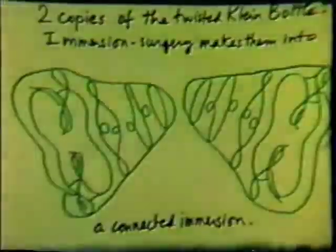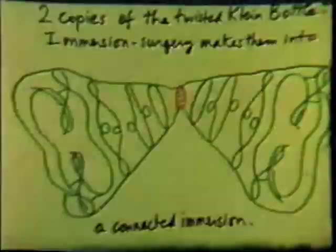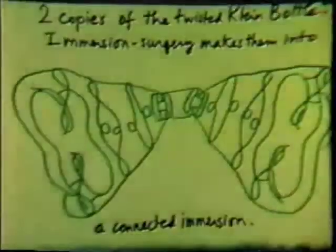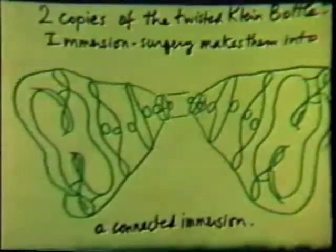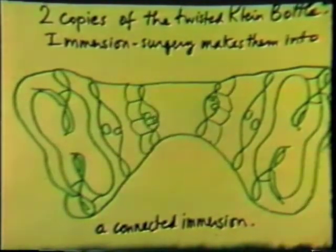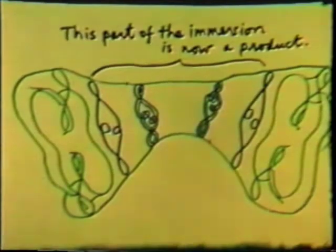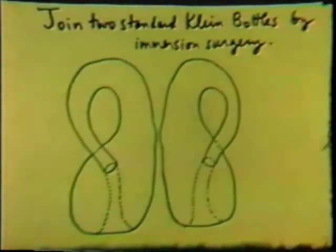Four copies of Boyd's surface are immersion cobordant to two copies of the twisted Klein bottle. We tilt them slightly and join them by an immersion cobordism. We now continue the deformation by a regular homotopy. The central part of the immersion is now a product. Join two standard Klein bottles by immersion surgery.